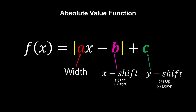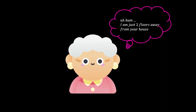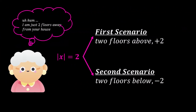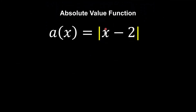Back to grandma — she says she's staying two floors away from your house in a condominium. She doesn't tell you whether it's above or below. The word 'away' is represented by the modulus sign, and the unknown floor difference is represented by a variable. So we have the modulus of that unknown equals 2. Whenever we have an unknown inside a modulus function, we always have two scenarios: the first scenario is positive, and the second is negative. So it's either two floors above or two floors below.